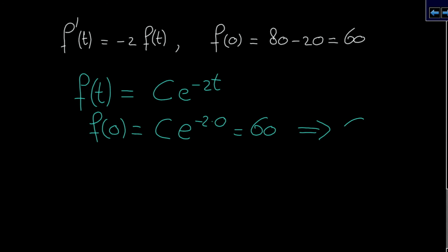So we have c is equal to 60 and the solution of our differential equation becomes f(t) is 60 times e to the power minus 2t.